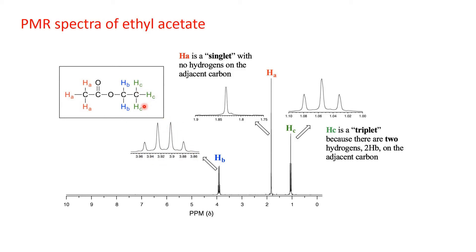Coming to the green-colored terminal CH₃ protons: they are attached to a carbon not connected to any electronegative atom or electron-withdrawing group, so electron density around them is more — they are in the shielded position and the PMR absorption peak arises at upfield. The adjacent carbon has two protons, so the PMR signal splits into three (2+1), giving a triplet in the ratio 1:2:1 at upfield.